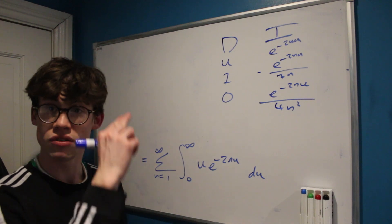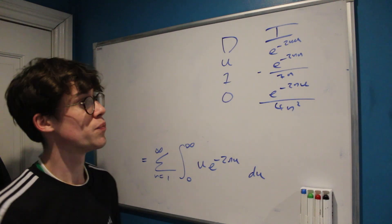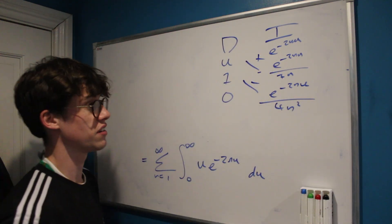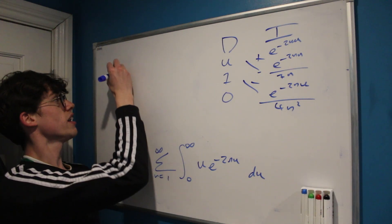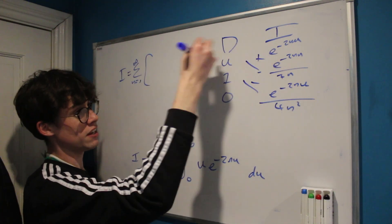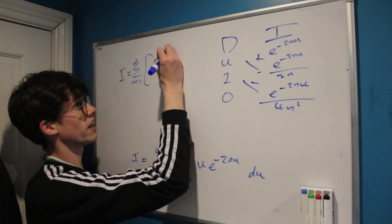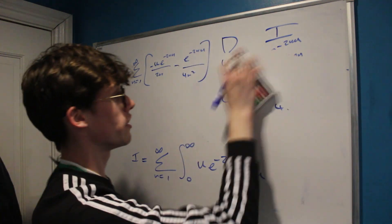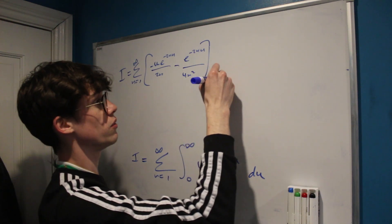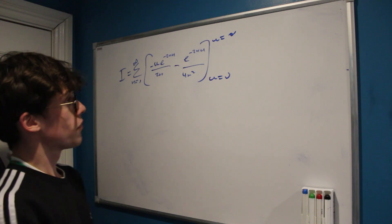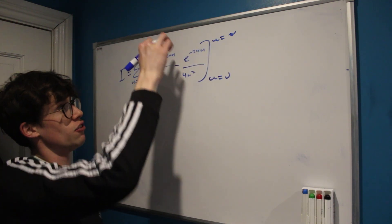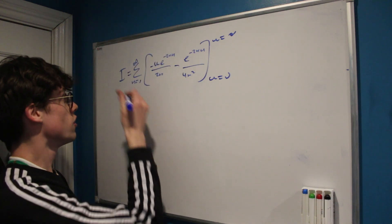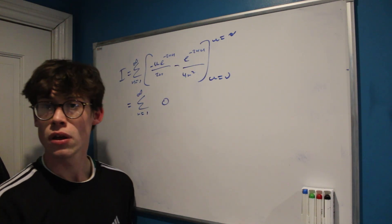With the DI method we add across the diagonal, alternating signs: plus, minus, plus. So the value of our integral I equals the sum from n = 1 to infinity of [−ue^(−2nu)/(2n) − e^(−2nu)/(4n²)] evaluated from u = 0 to u = infinity. At the upper bound, e^(−2nu) approaches e^(−∞) = 0 in both terms, so the upper bound contributes 0.